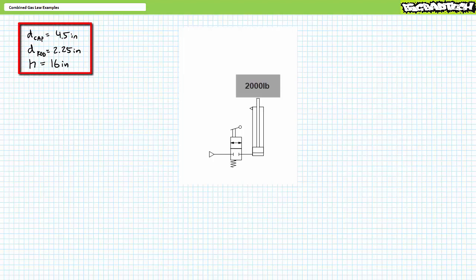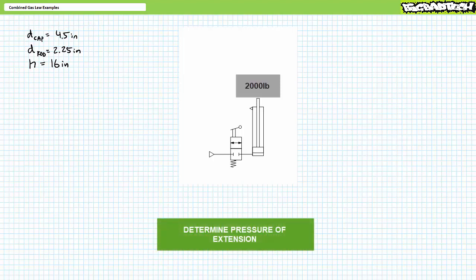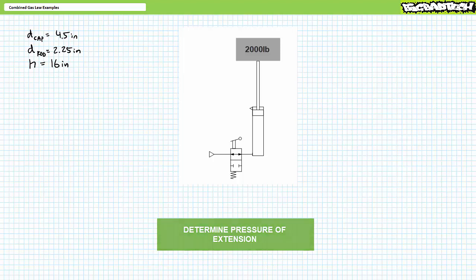Consider a pneumatic cylinder with the following dimensions: cap diameter four and a half inches, a rod diameter of 2.25 inches, and a travel length of 16 inches. Part one: determine the pressure necessary to fully lift a 2,000 pound weight when oriented in the following fashion. In this orientation, lifting the weight makes use of the full cap end area.